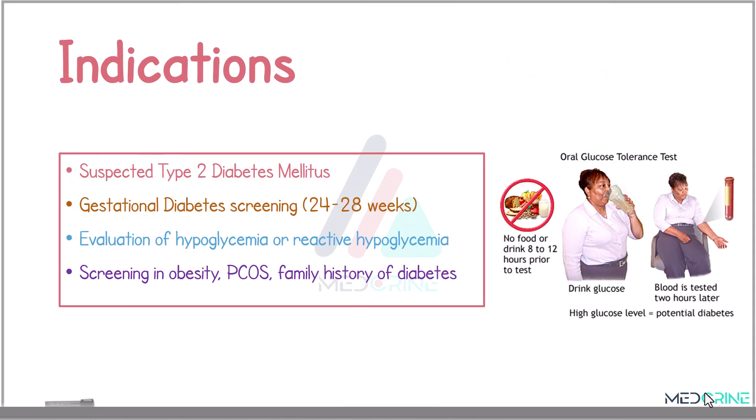Some of the indications for glucose tolerance testing are suspected type 2 diabetes mellitus, gestational diabetes screening at 24 to 28 weeks, evaluation of hypoglycemia or reactive hypoglycemia, and screening in obesity, polycystic ovarian syndrome, and a family history of diabetes.